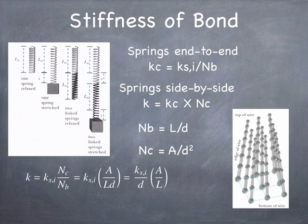If you plug in numbers for copper, as the textbook does in its example, you'll see it comes out to about 27 newtons per meter. In other words, the bond strength between neighboring atoms is sort of a typical spring constant for a macroscopic spring. It's very interesting.